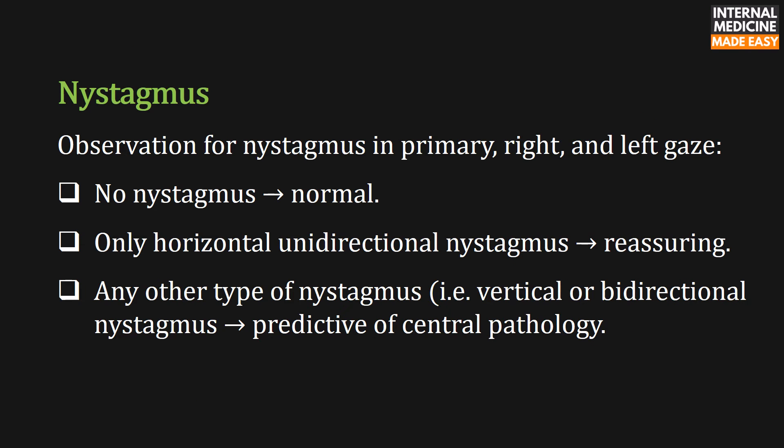Observation for nystagmus in primary, right, and left gaze is performed. If there is no nystagmus, then it is normal. In the case of only horizontal unidirectional nystagmus, the condition is reassuring. But in any other type of nystagmus — for example, vertical or bidirectional nystagmus — it is predictive of central pathology.